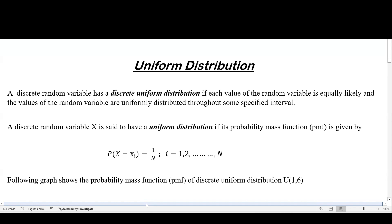After that, I will be discussing binomial, Poisson, and so on. A discrete random variable has a discrete uniform distribution if each value of the random variable is equally likely, and the values are uniformly distributed throughout some specified interval. Equally likely means all probabilities are the same for all values of the random variable. For example, if we toss a die, the probability of getting 1, 2, 3, 4, 5, or 6 is 1/6. And if we are tossing a coin, it would be either head or tail, each with probability 1/2. These are equally likely events.